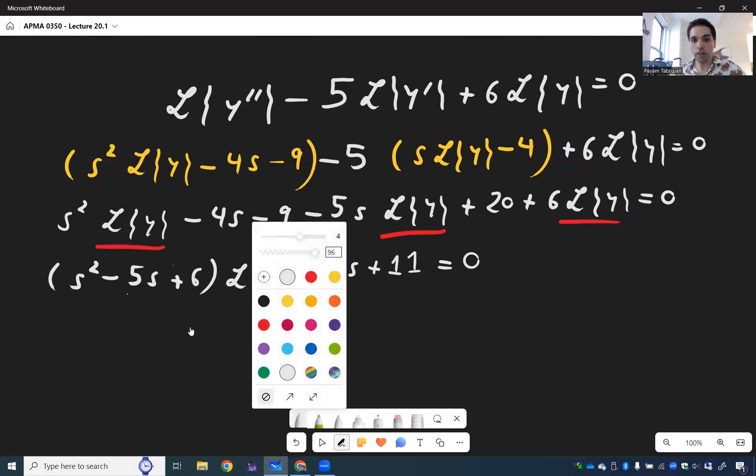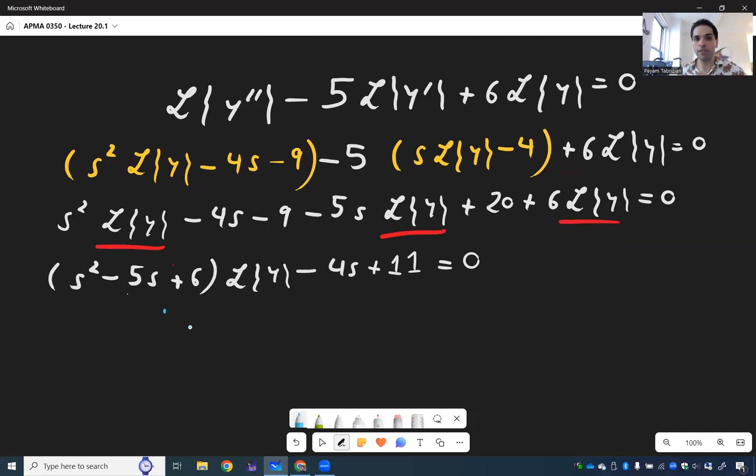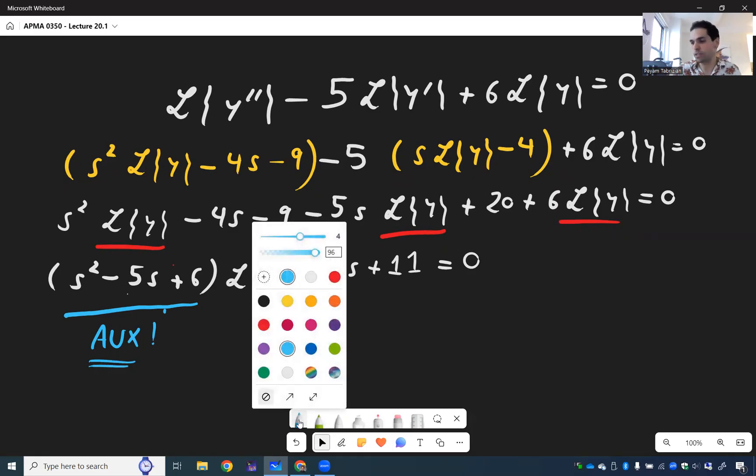But before we continue, I do want to mention something important here for checking your work. So here we have S squared minus 5S plus 6. You may ask, where does this appear in our ODE? Y double prime minus 5Y prime plus 6Y. It's precisely the auxiliary equation. So a great way of checking your work is your auxiliary equation always has to appear here.